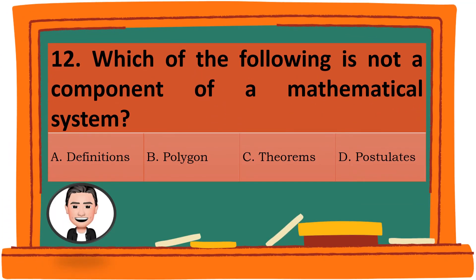Question 12. Which of the following is not a component of a mathematical system? A. Definitions. B. Polygon. C. Theorems. D. Postulates. The correct answer is B. Polygon.